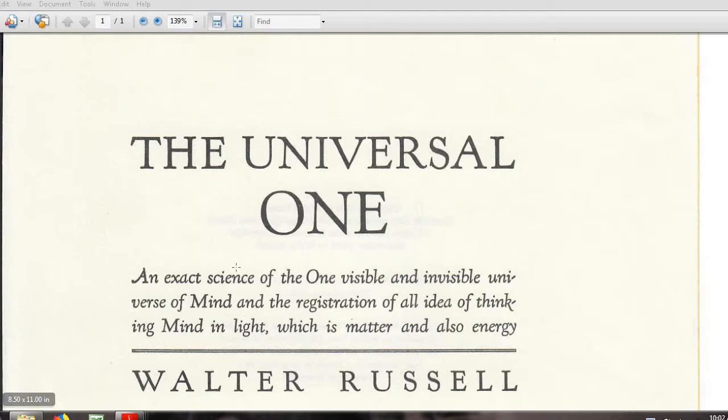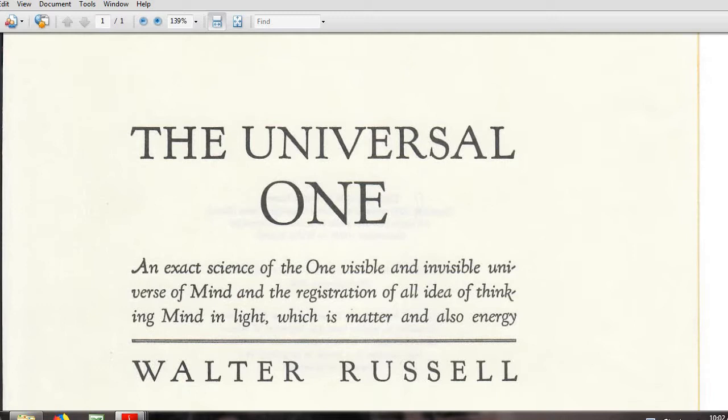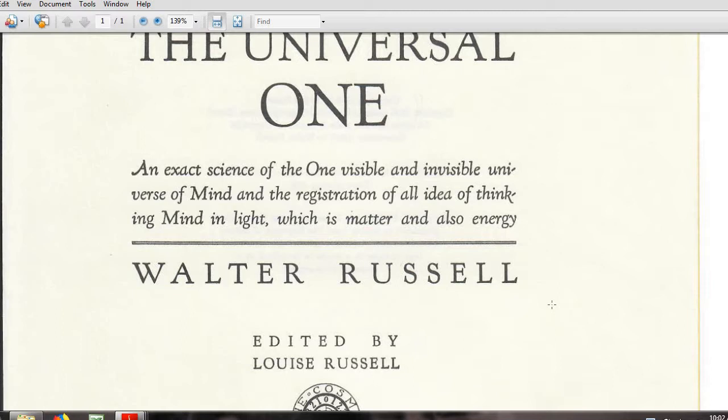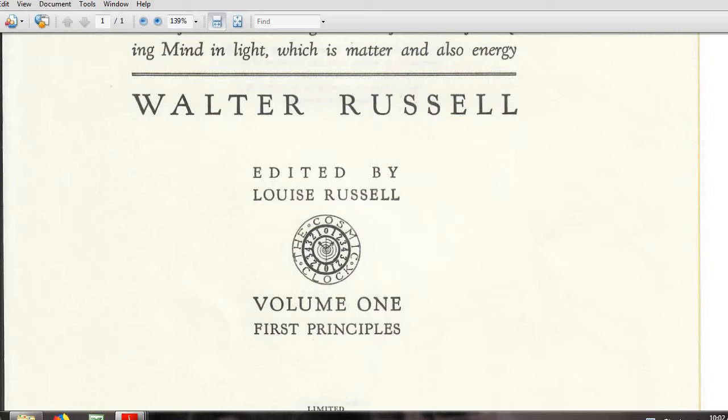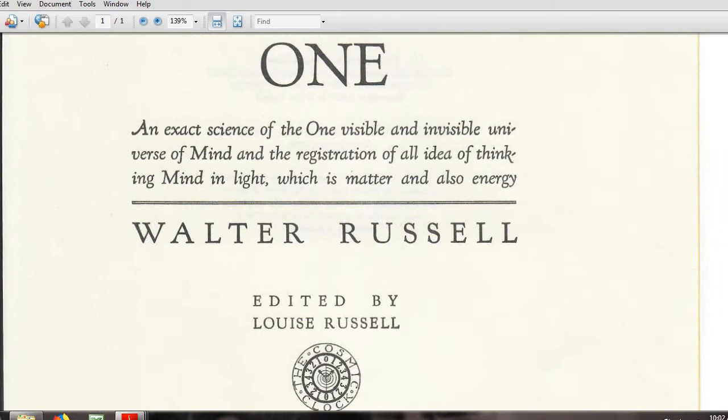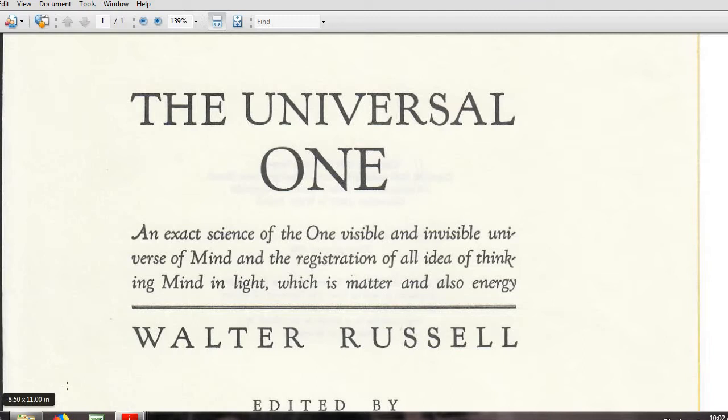And so the primary reference book that I am using here is called the universal one by Walter Russell, originally written in 1926, and I have scanned many of the drawings that he's put into the book. So this version was first put to print in 1968, and I think this is the third or fourth printing, and it's easily available out there if you want to go and buy your own copy.